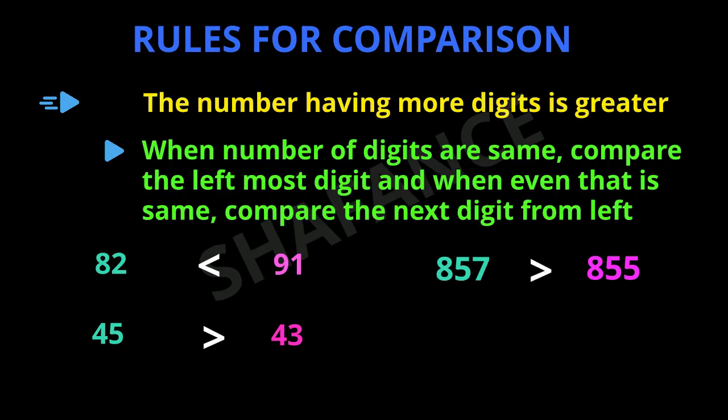Let us take one more final example. We have 659 and the second number is 672. The leftmost digit is 6 in both cases. But the second digit from the left — in the first case we have 5 and in the second case we have 7. So 7 is greater than 5, meaning 672 is greater than 659.